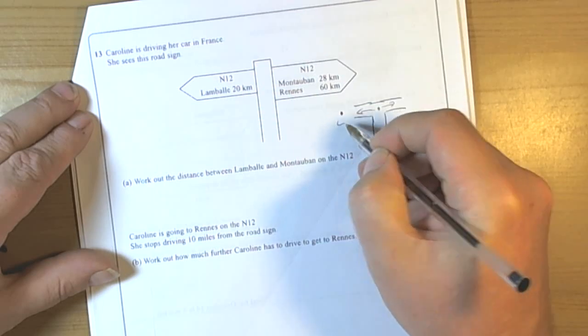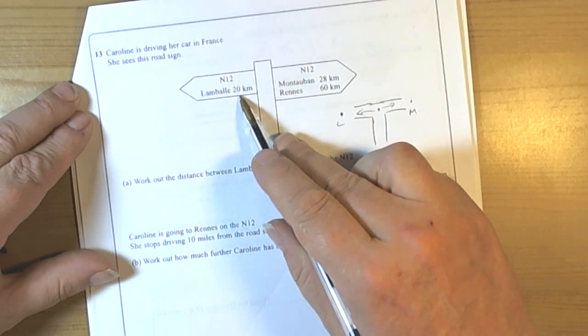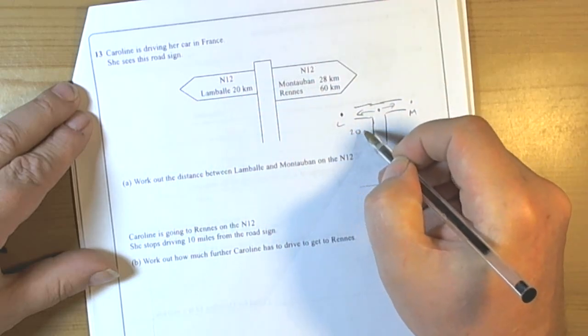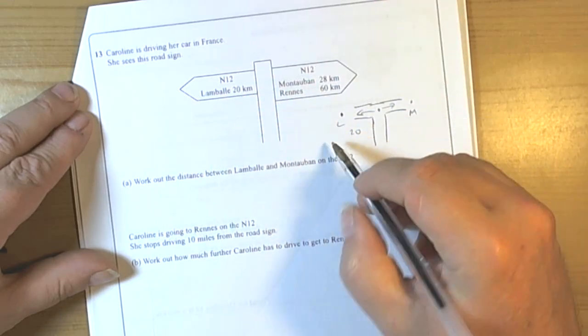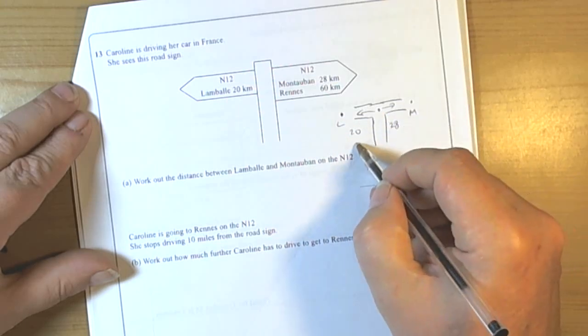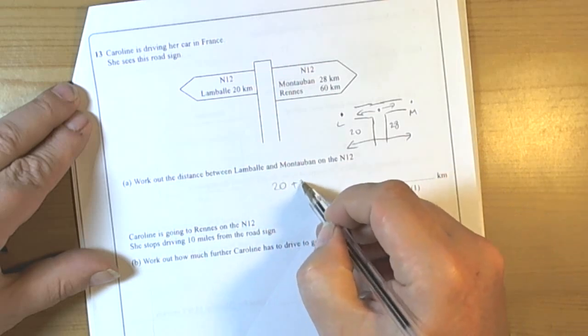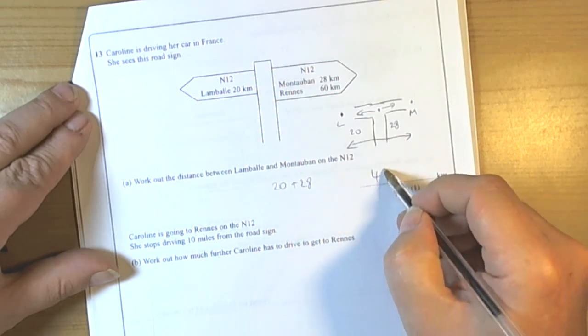So Lambelle over here, Montserban over there. The signpost is saying it's 20 kilometres that way and it's going to be to Montserban 28 kilometres that way. So we've got a total distance between the two of them of 48 kilometres.